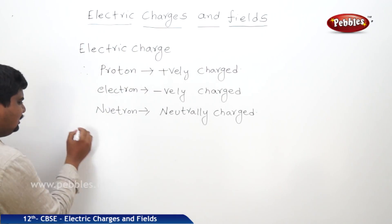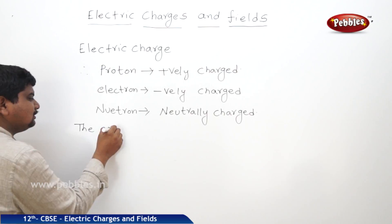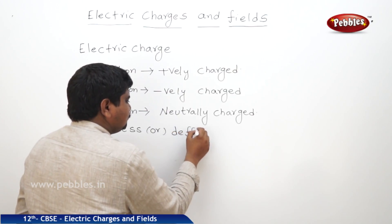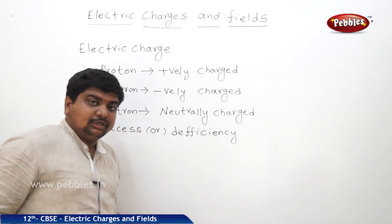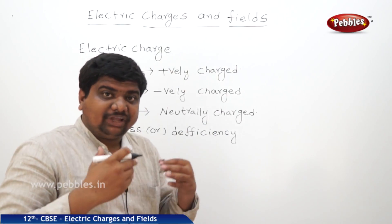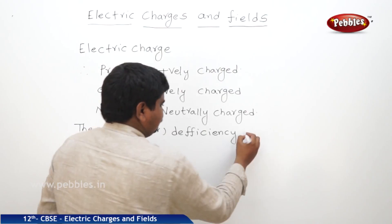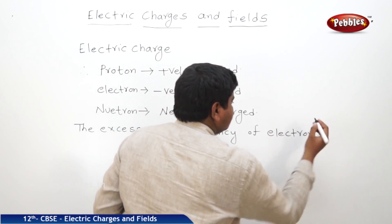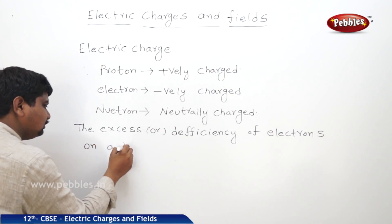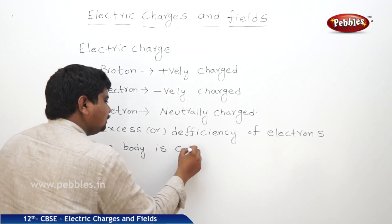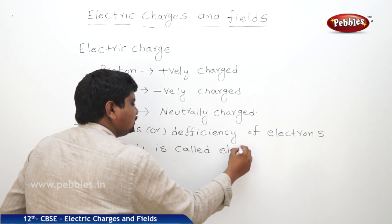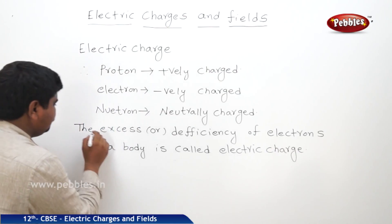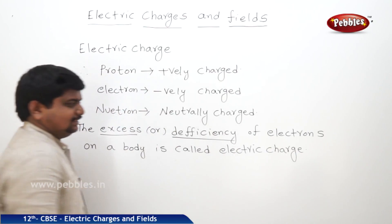What is electric charge? The excess or deficiency of electrons on your body is called electric charge. We are talking about excess or deficiency of electrons.